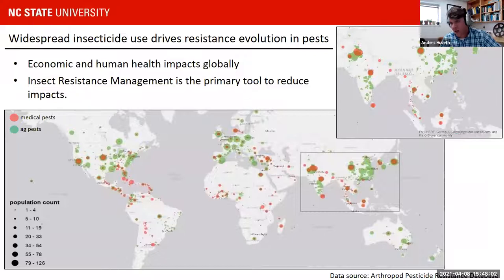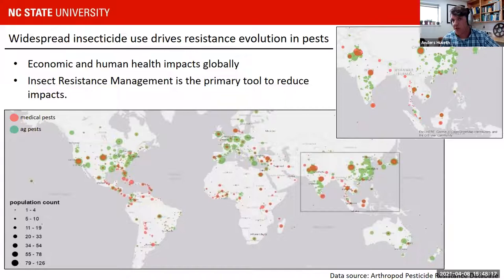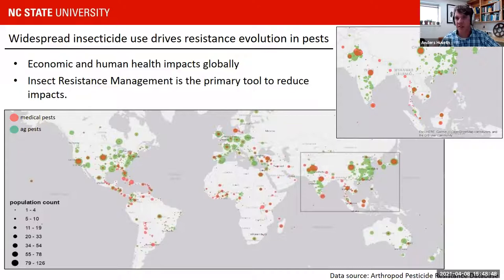Insects have a remarkable capacity to develop resistance. These are physiological detoxification pathways in which they can feed on a toxic plant or be exposed to a toxic chemical and withstand that exposure — what we consider insecticide resistance. Those insects go on to pass on their genetics. If we look at the global scale of resistance, these are resistance records back to the 1960s. We see that throughout the tropical and temperate areas, there's an awful lot of resistance in both agricultural and medical pests — including things like malaria, mosquitoes, and ticks. This is an interesting representation of the extent of resistance that happens due to the overuse of insecticides.